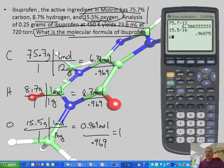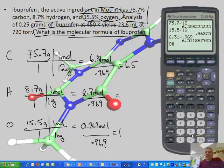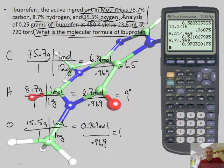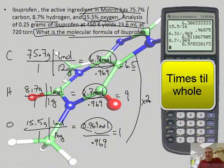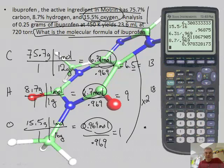This one's going to be easy because that's 1. Carbon: 6.31 divided by 0.969 gives me 6.5. Hydrogen: 8.7 divided by 0.969 gives me about 9. Now this ends in a half, so divide by small, times till whole. Since I have a half, I'm going to multiply everything by 2. So 6.5 times 2 is 13, 9 times 2 is 18, and 1 times 2 is 2.